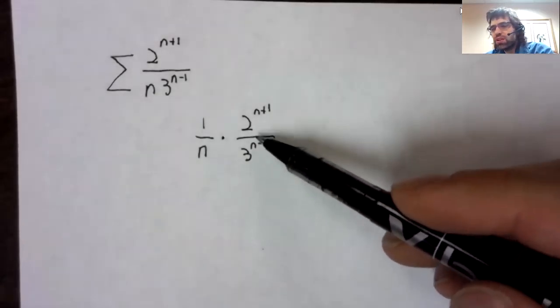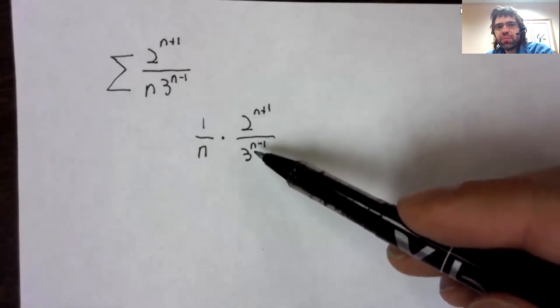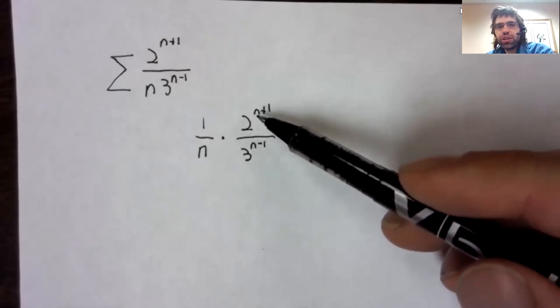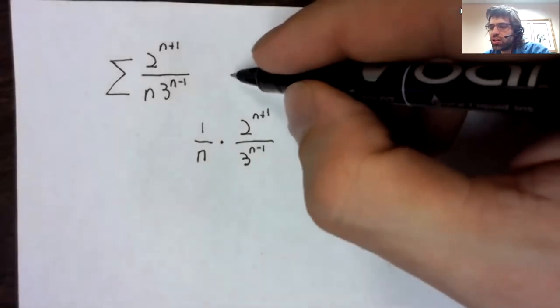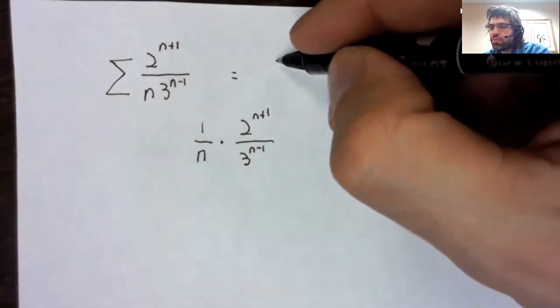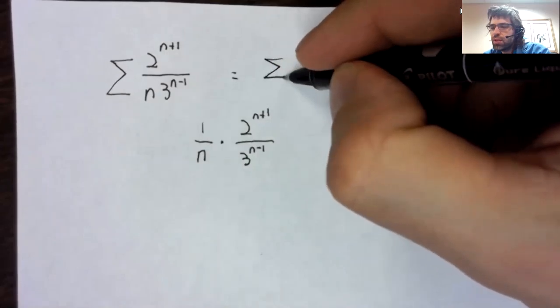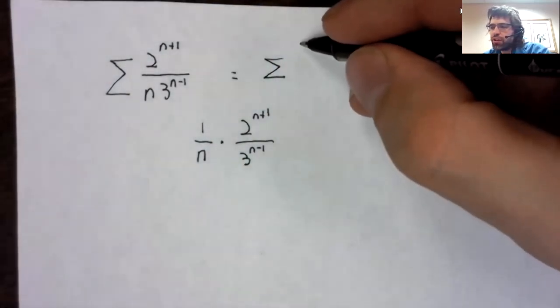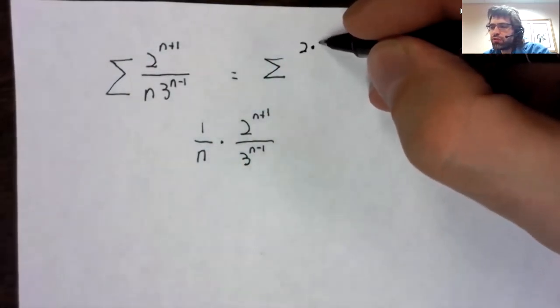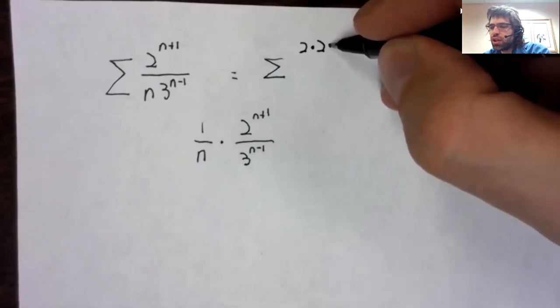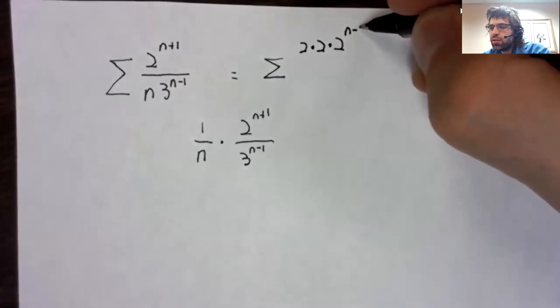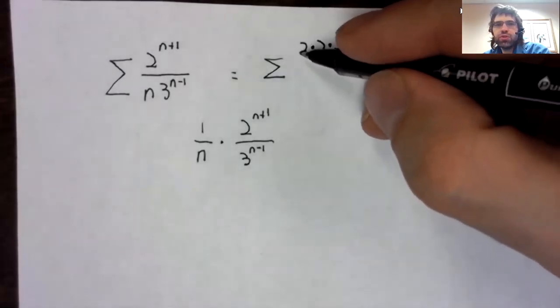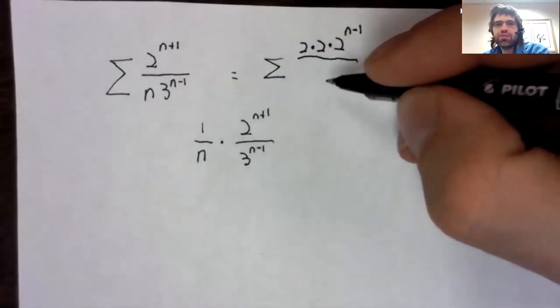So I think I'm going to try to do something involving the comparison test. But this isn't a geometric series. Is there any way I can make it geometric?